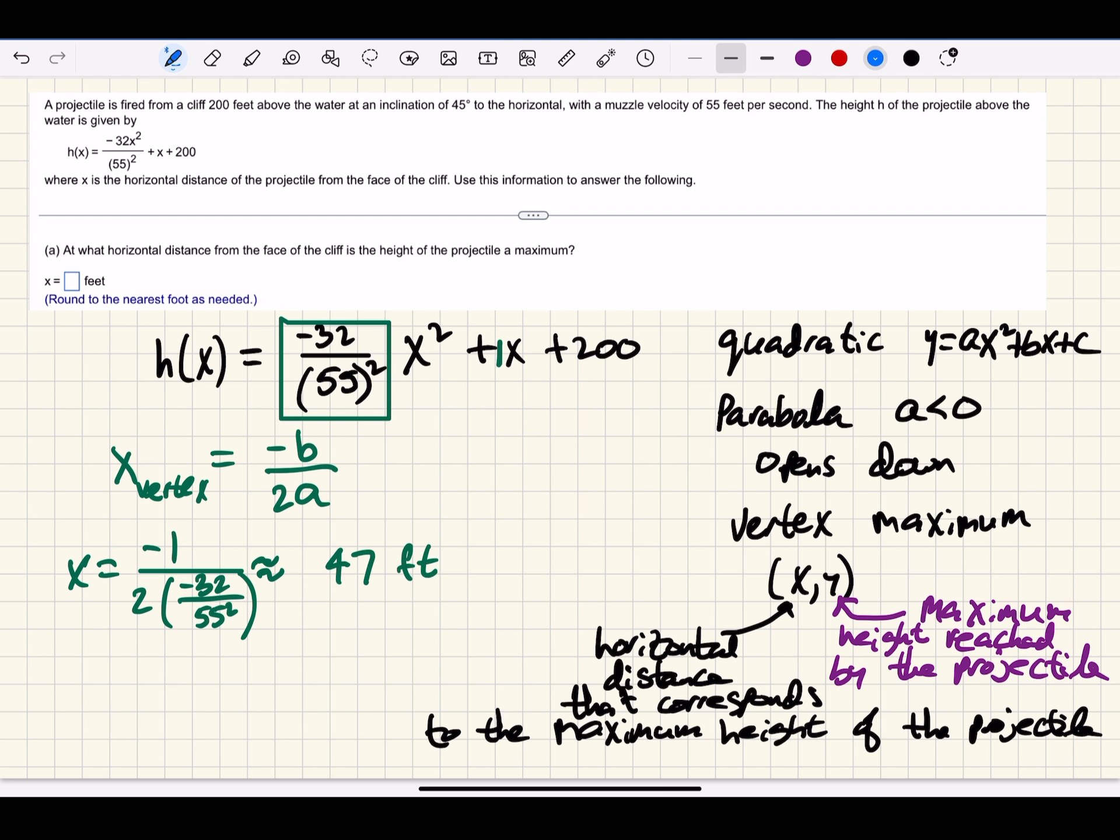We could then find the maximum height of the projectile by finding the y coordinate that corresponds to this x coordinate. So we would substitute 47 into our function for x. If we round this to the nearest tenth of a foot, we would find that the maximum height would be 223.6 feet.